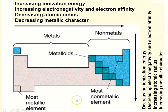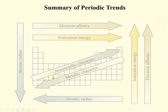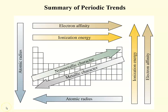To summarize the trends: ionization energy, electronegativity, and electron affinity increase from left to right across a period. Radius and metallic character decrease from left to right. Going from top to bottom, ionization energy, electronegativity, and electron affinity decrease, while atomic radius and metallic character increase. I'll give you a summary handout. This is Ms. Augustine signing off.